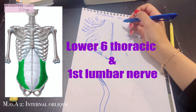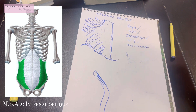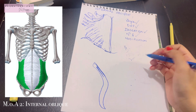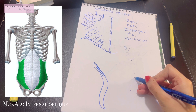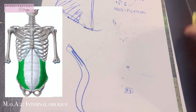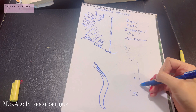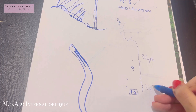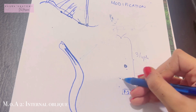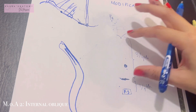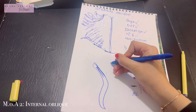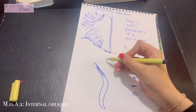The nerve supply of the internal oblique is the lower six thoracic nerves plus the first lumbar nerve. An important modification concerns the division of the abdominal wall. If we draw a point midway between the umbilicus and the pubic symphysis, this demarcates the upper three-fourths from the lower one-fourth of the abdominal wall.